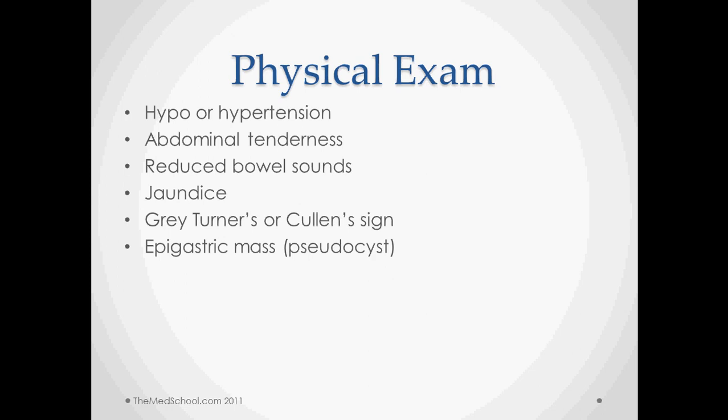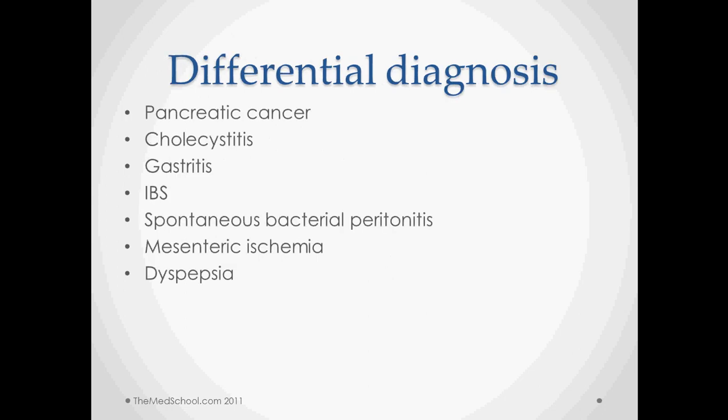Reduced bowel sounds will show up because of a reflex small bowel ileus. They may have some jaundice. Grey Turner's sign and Cullen's sign are both results of internal bleeding, and an epigastric mass may be palpable if they have a pseudocyst associated with their pancreatitis.